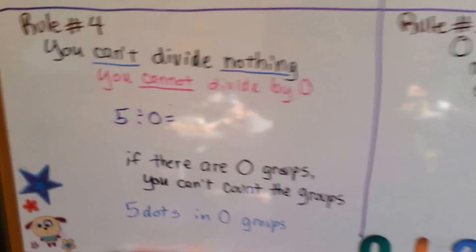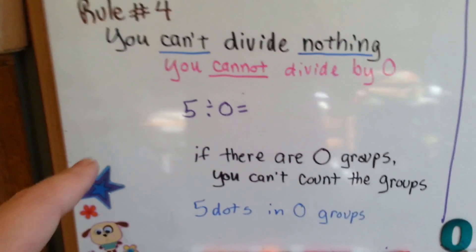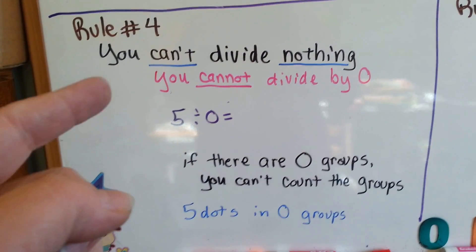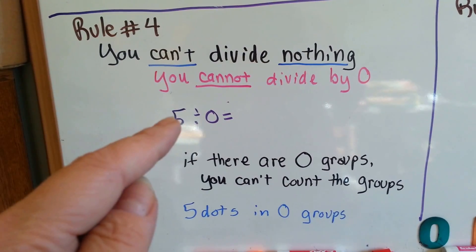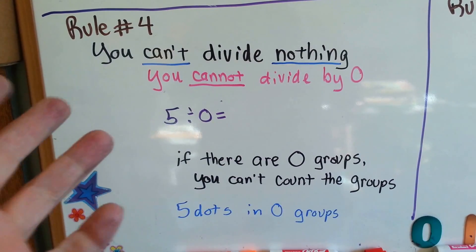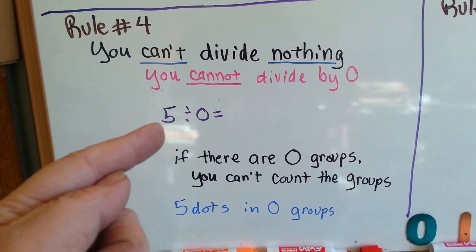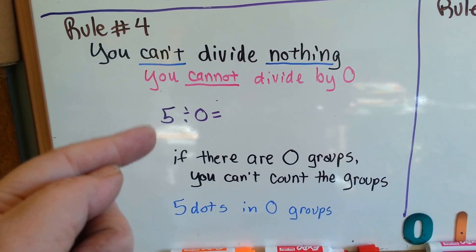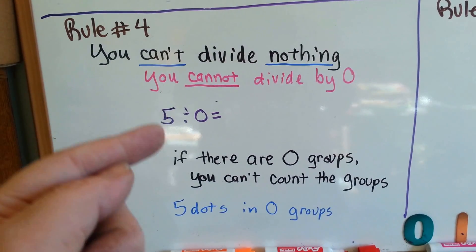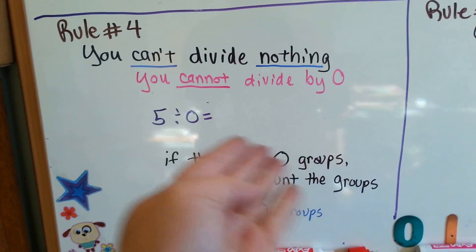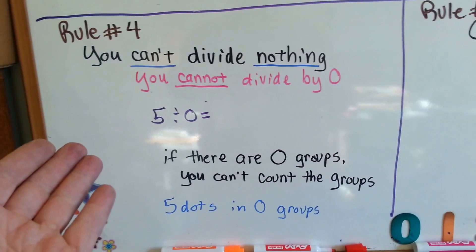So here's rule number 4. This one is the silliest. Rule number 4 is you can't divide nothing. You cannot divide by 0. 5 divided into 0, you can't do it. So there's not even an answer. If there are 0 dots, let me rephrase this. If there are 5 dots in no groups, there's no groups. See there's no black circles? There's no groups to count.